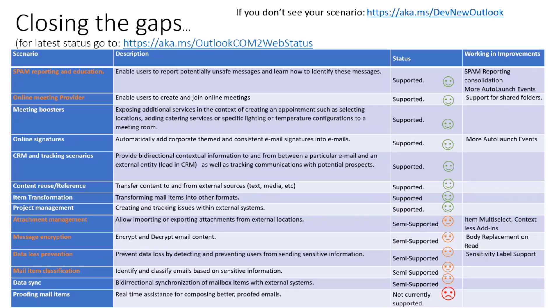We recently posted — actually yesterday, for the first time — a page that is going to be very useful for this process. This is a live page. If you go to aka.ms/OutlookCOMtoWebStatus, you're going to see a page that gives you information about what the new Outlook means for you, and we will also share the status of different scenarios that can be implemented today.